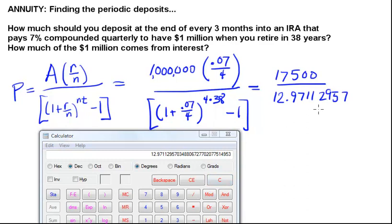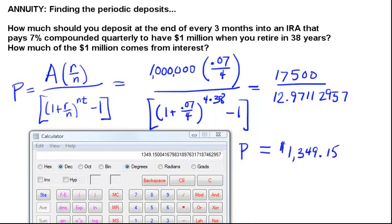Alright, so I put all of this in my denominator here of 12.97112957. Maybe your calculator shows you more decimals and maybe it shows you less. Obviously this one shows me a lot more, but I'm not going to type all that in. And then I just have one more thing to do. I'm going to take this 17,500 and I'm going to divide it by this result here. Alright, so when you do this, you should get an answer of $1,349.15.